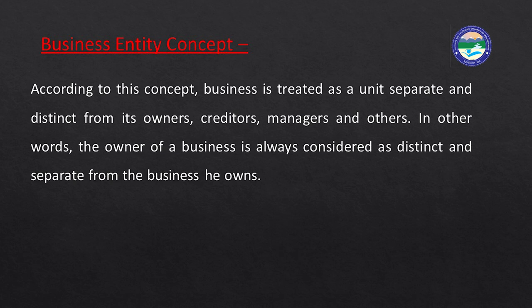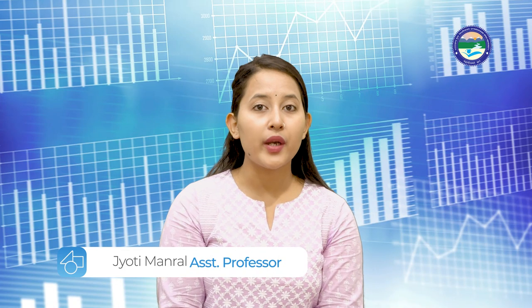This principle says the owner of the business is different and the business is different. For example, at the time of starting a business, the funds provided by the owner are known as capital. We consider the owner as a different person and the firm as a different entity — that is why we record capital on the liability side of the balance sheet. It is considered that the owner has provided funds or a loan to the firm.